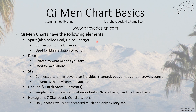The Qimin chart has these following elements. You have a spirit — sometimes called a god, ten gods, deity, or energy. I like the word 'spirit' because it has less religious connotation than 'god.' This is a connection to the universe, something beyond the earth, and it's largely used for manifestation direction in day-to-day life, though it's sometimes the focus when looking at a forecast chart. Then you have a door, which is related to what actions you should take.